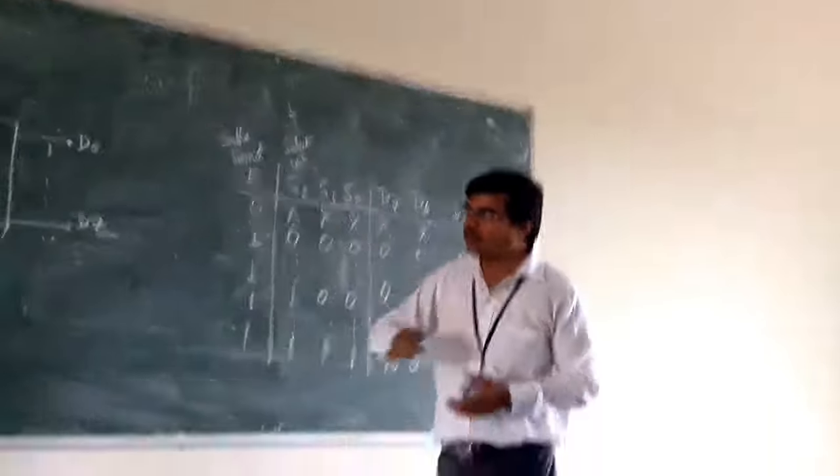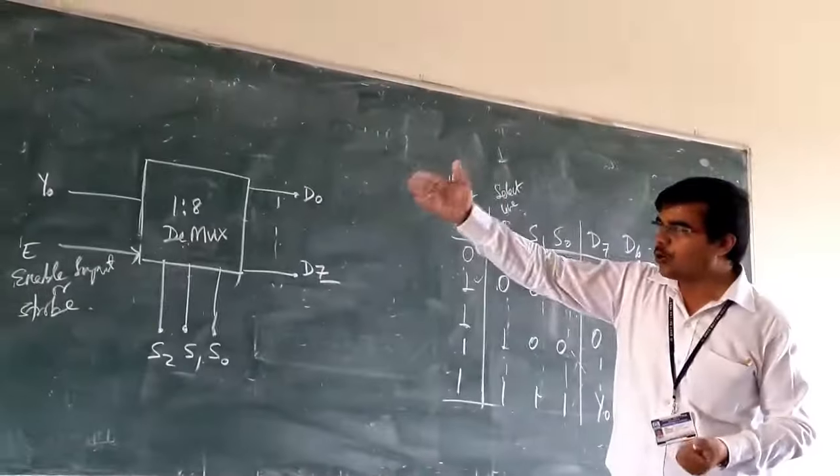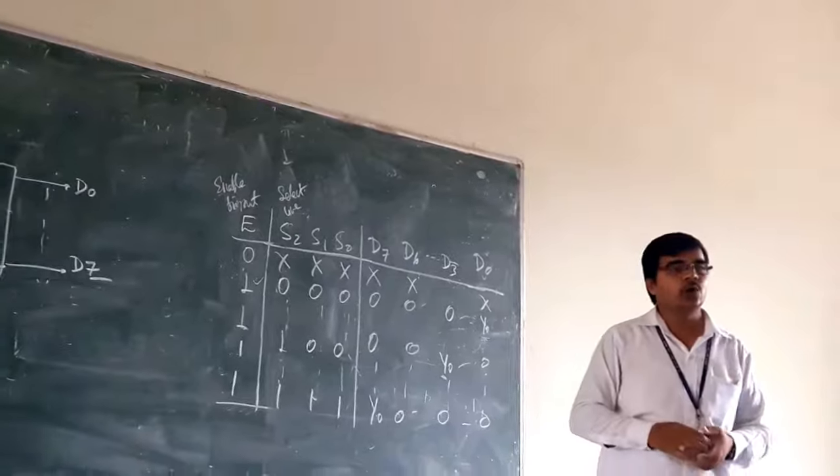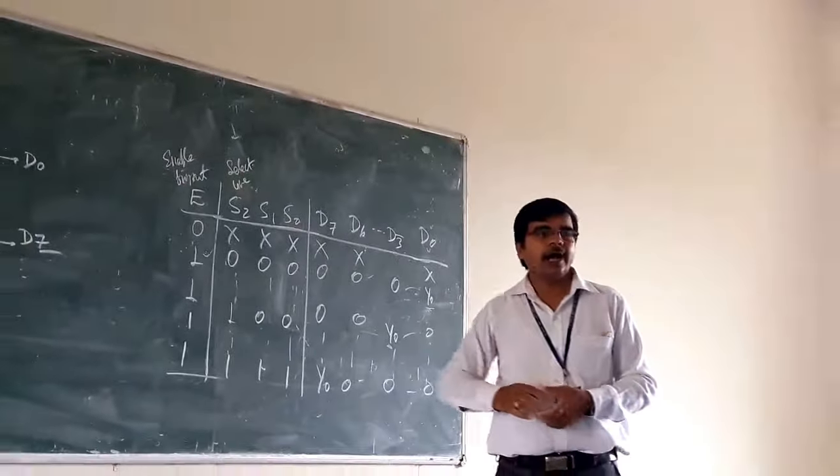In this way, you can go for other types also. You can go for your 1 is to 2, 1 is to 4 and 1 is to 16. All are having the same operation.